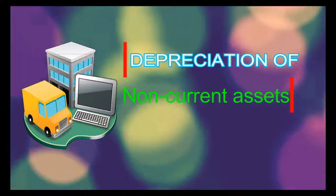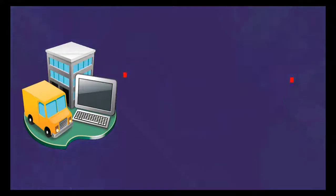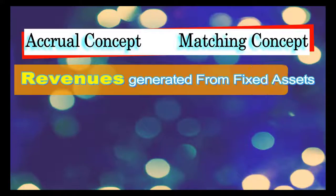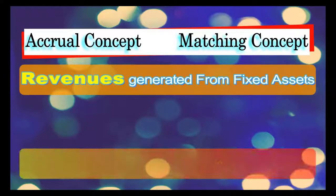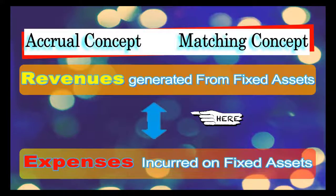Why do we need to depreciate a fixed or non-current asset? The need to depreciate non-current assets arises from the accruals assumption of accounting and the matching concept, which state that a business should be charging depreciation on assets in respect of revenues that a business has generated by using that asset. The purpose behind this is that revenues and expenses should be matched for each period.